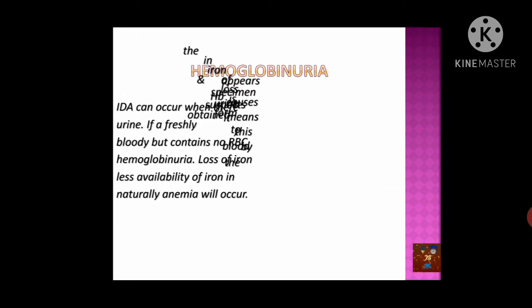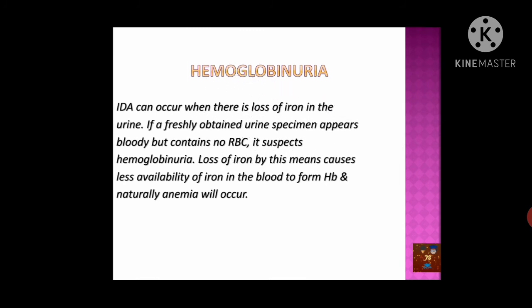Hemoglobinuria means the urine contains iron-containing hemoglobin without any red blood cells. When a urine sample shows brick-red coloration resembling blood but no RBCs are present, it confirms hemoglobinuria — iron is being lost through the urine — and naturally iron deficiency anemia will occur as a result.